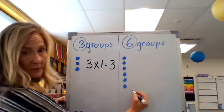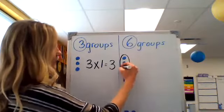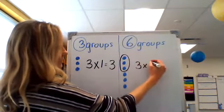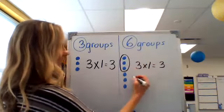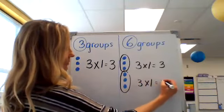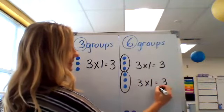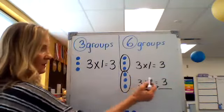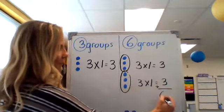Anyway, over here we have six groups of one. So I can think of six groups of one as being three groups of one. And I know that's three and another three groups of one, which would be another three. So six groups of one is going to be three and another three, which is six.